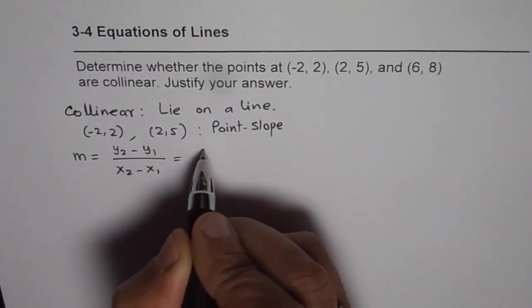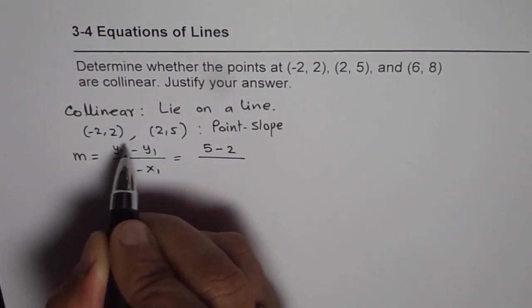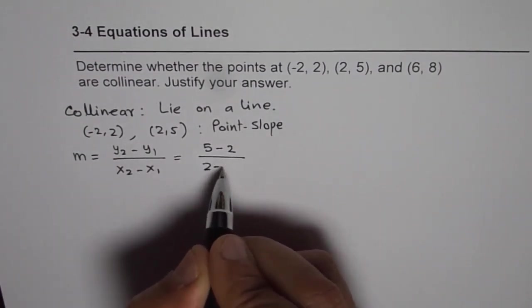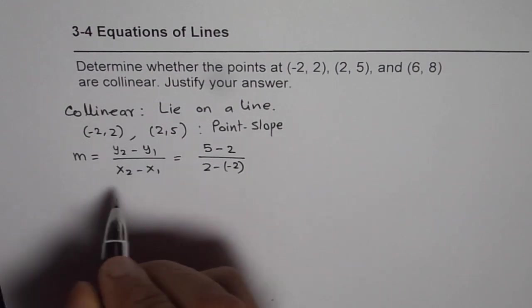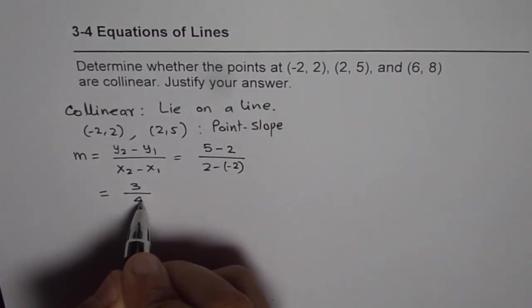We can substitute these points x1, y1, x2, y2. So y2 minus y1 will be 5 minus 2 divided by 2 minus (-2). What we get here is 3 divided by 4.